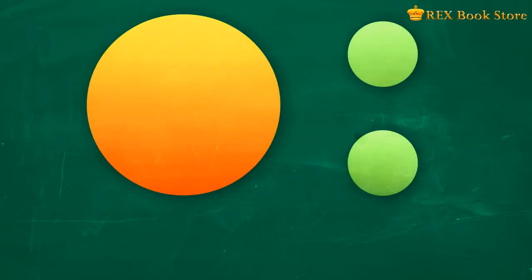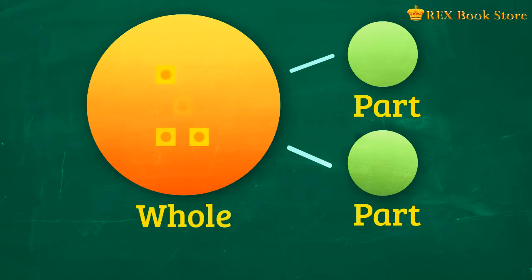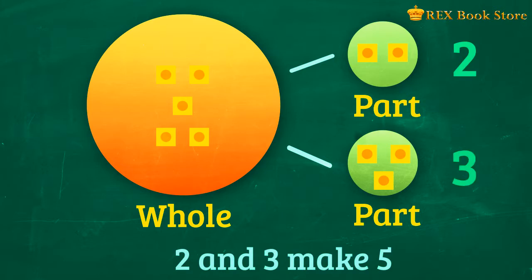A number bond shows the relationship between what we call the parts and the whole. For this example, we can say that 2 and 3 make 5.